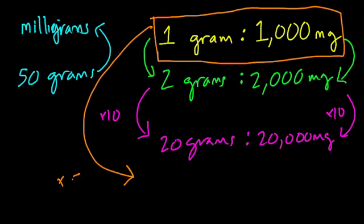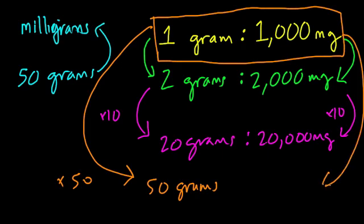I can simply multiply 1 gram by 50. And by doing that, I get 50 grams. But of course, I have to keep this proportionate, and I want to multiply 1,000 by the same amount to get 50,000 milligrams.